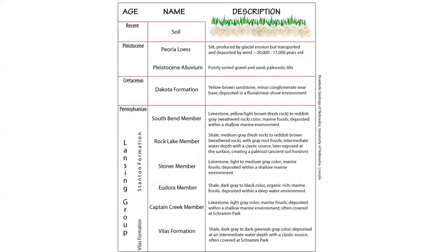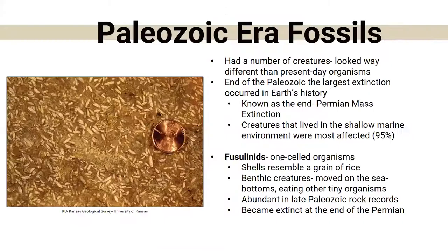If you look at what Pennsylvanian rock means visually — going from the very top layer of soil down — you can see these rock columns. On the far left of the column, it shows the time period, and it references things like the Dakota formation. This is the type of rock found in those areas, and it gives a visual idea of what the different substrates and formations look like.